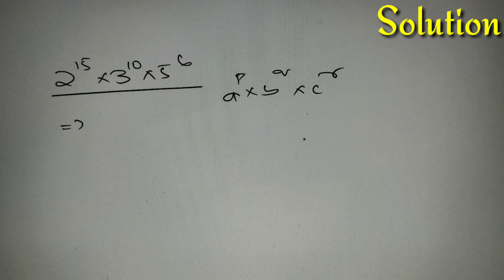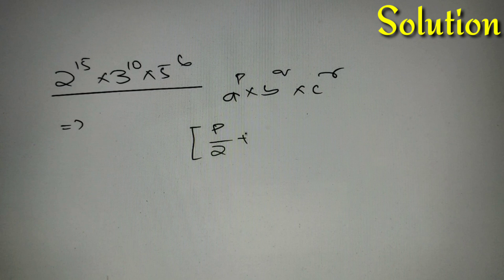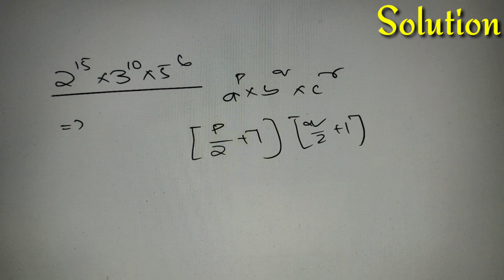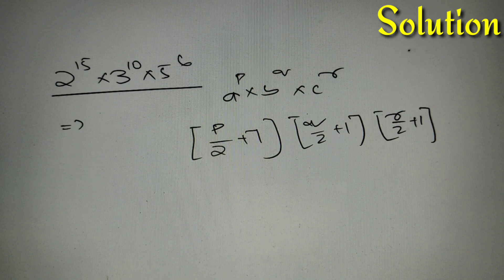So if we have a number A raised to power P into B raised to power Q into C raised to power R, and we want to find how many factors are perfect square, the answer will be greatest integer of P by 2 plus 1, into greatest integer of Q by 2 plus 1, into greatest integer of R by 2 plus 1, and so on for all prime numbers and powers.